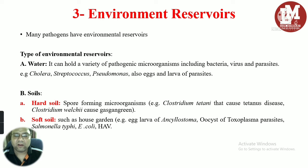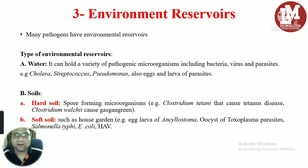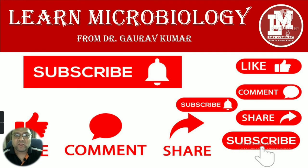Soil can broadly be classified into two groups. Hard or dry soil usually contains spore-forming microorganisms, such as bacterial spores of Clostridium tetani, Clostridium botulinum, and many fungal spores. Soft soil — for example, garden soil or agricultural soil — tends to have a high number of parasites, eggs, larvae, and some bacteria, especially enteric bacteria like E. coli, Salmonella, and Shigella, as well as some enteric viruses like hepatitis A virus.